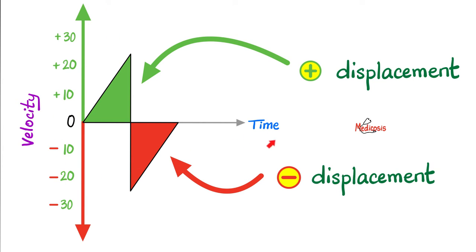First, you look at the graph. The first order of business is to look at the axes. On the y-axis you'll have velocity, and on the x-axis you'll have time — hence, velocity-time graph. When you see an area that's above this horizontal line, this is positive. But when you see an area that is below this horizontal line, this is negative. Remember, the displacement could be positive or could be negative. However, distance doesn't care. So if I want the total distance, I will add this area to that area in positive numbers. But if I want the displacement, this area has to be positive and this one has to be negative, and then you add them together.